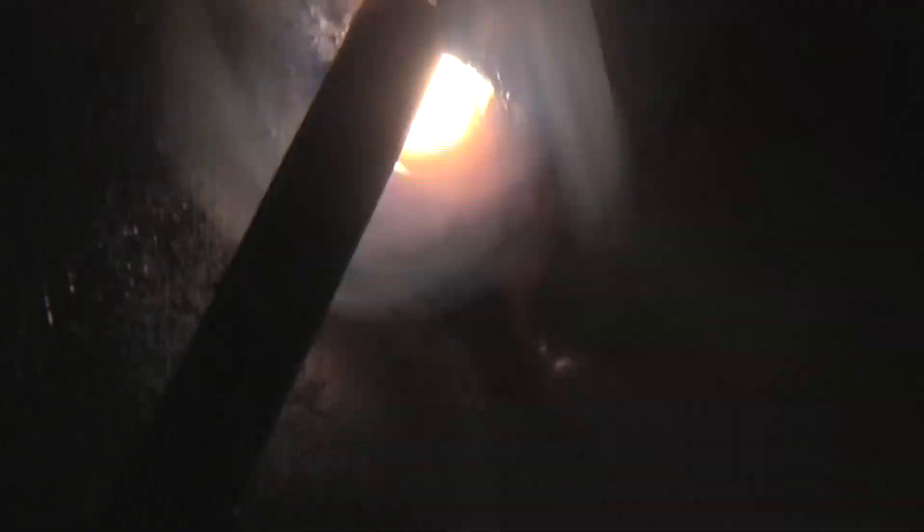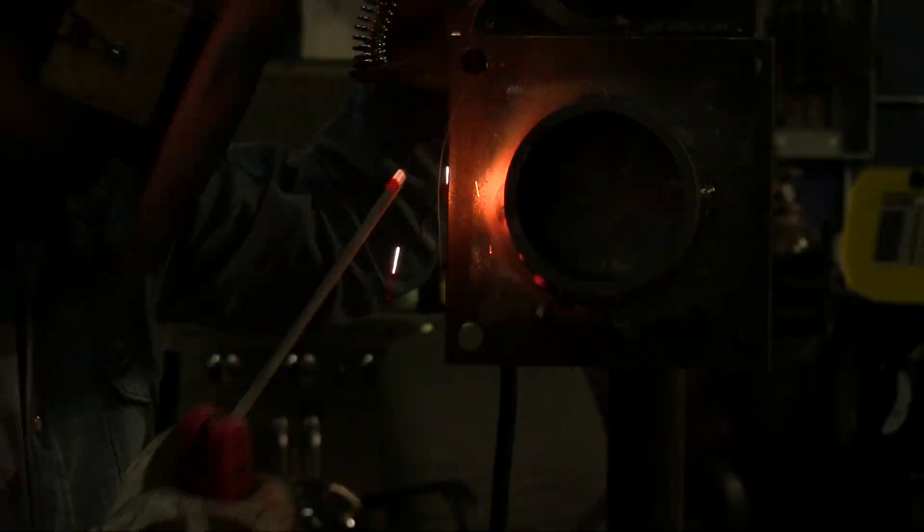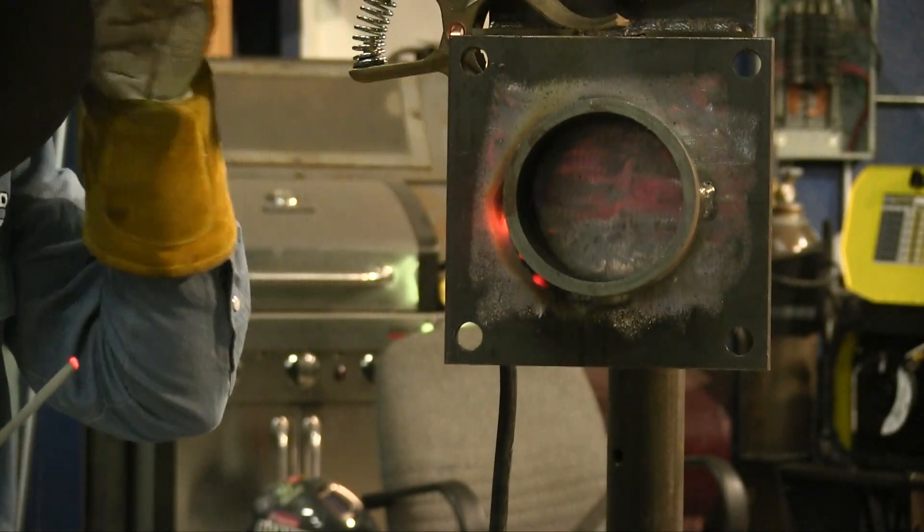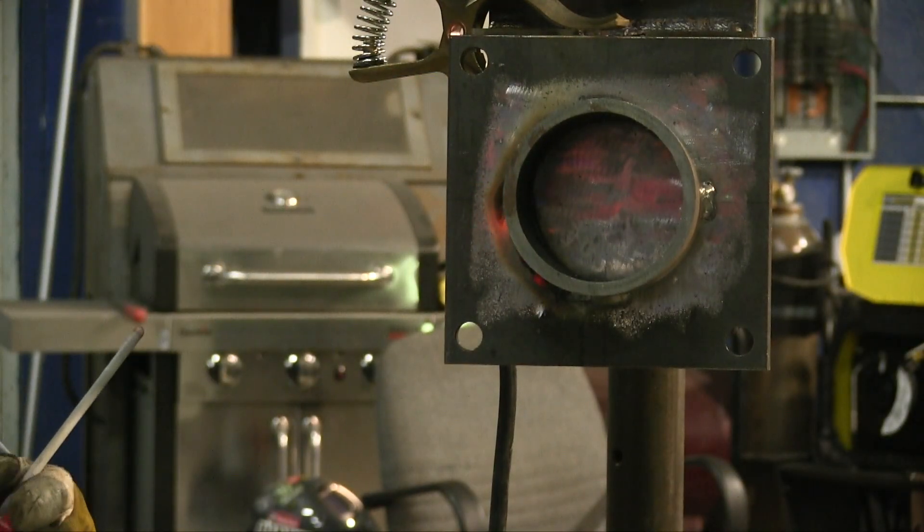The amperage at 145 amps, along with the arc control (also called dig), with that set kind of high, that helps not stick the rods. You can hold a fairly tight arc without sticking the rod if you've got enough amperage or if you've got the arc control function set maybe about seven to ten.